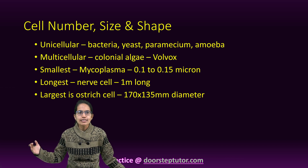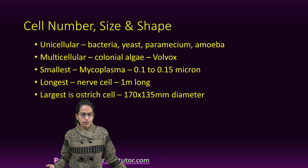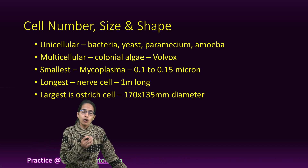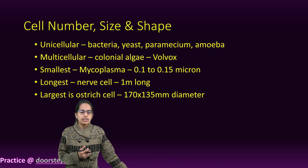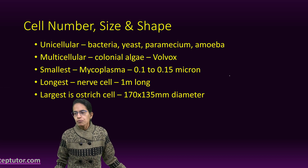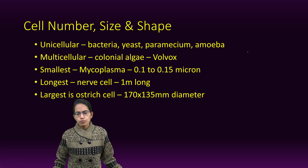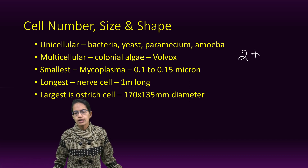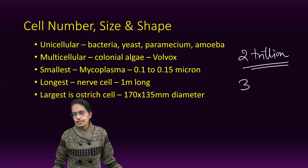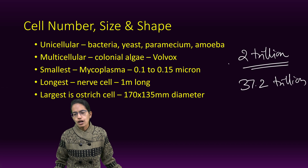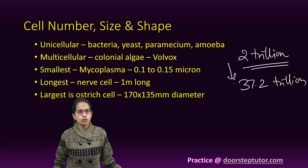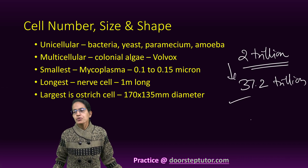The longest cell is the nerve cell, which is around 1 meter. The ostrich egg cell is considered one of the largest cells. In a newborn baby there are around 2 trillion cells, and in an adult there are 37.2 trillion cells — showing how multiplication of cells actually takes place.